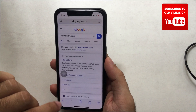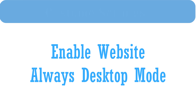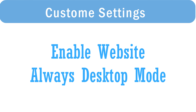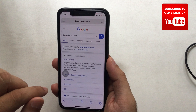First of all, open Safari browser on your iPhone. Now open a website in a new tab — here I open google.com. I'm converting this page into desktop view for analysis on my mobile iOS browser.